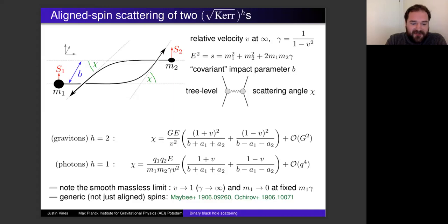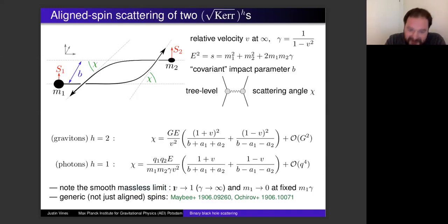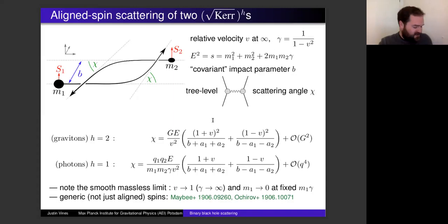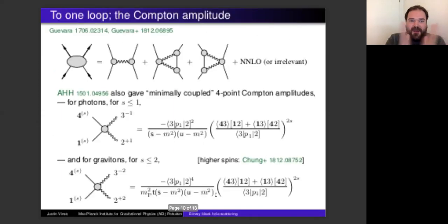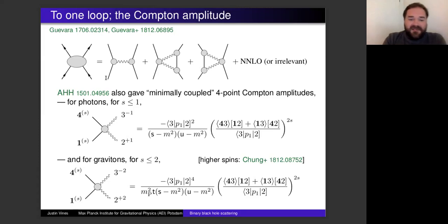An interesting point is the smooth massless (ultrarelativistic) limit: when v → c, one of the two terms disappears and only one helicity of the exchanged graviton or photon contributes. This limit exists and is smooth. This aligned spin case is special, but at tree level — one graviton or photon exchange — it can be done more generally, and there is work addressing that.